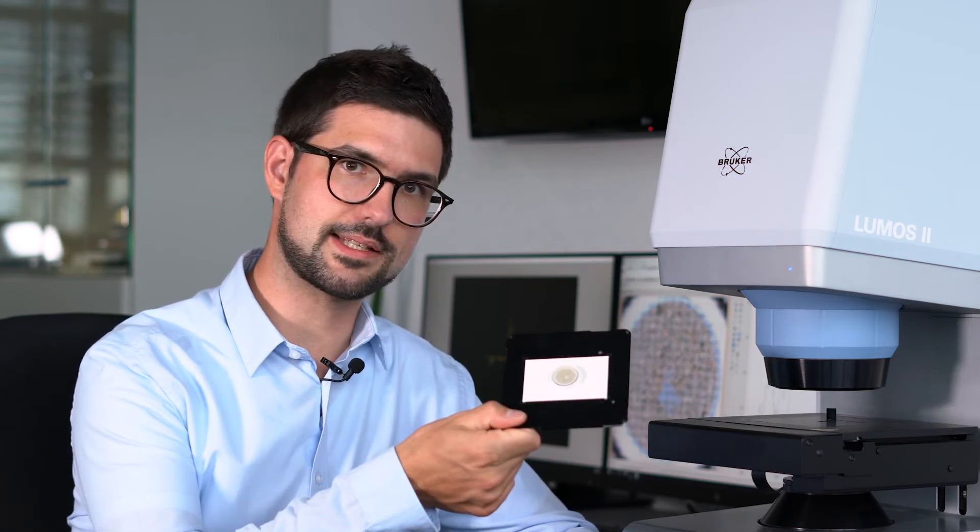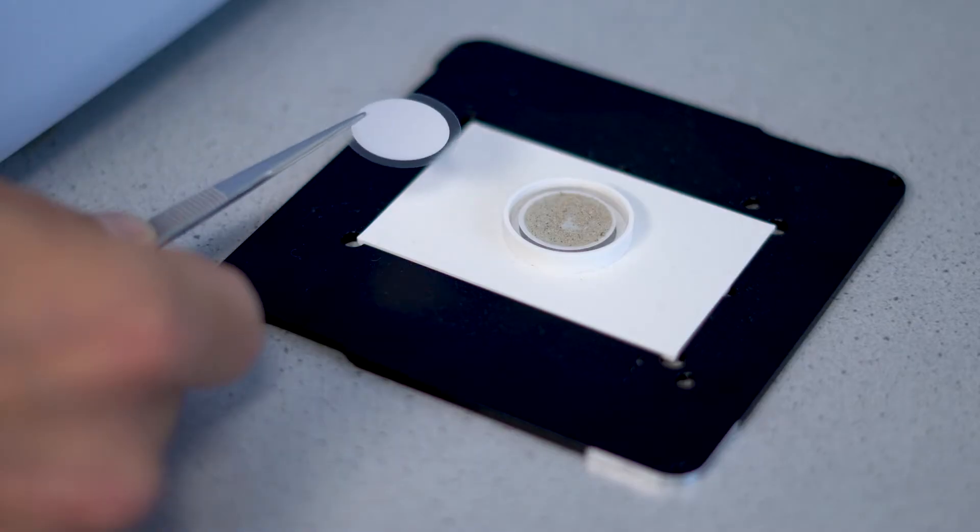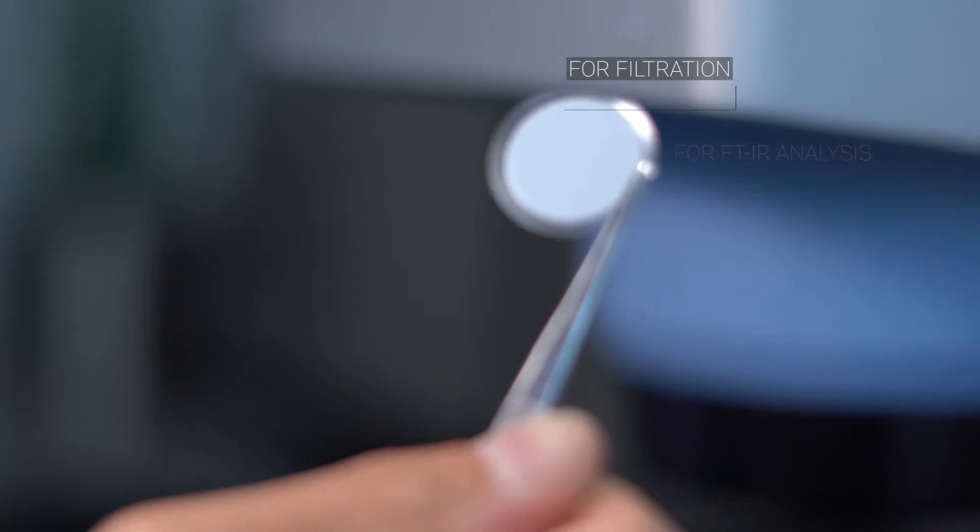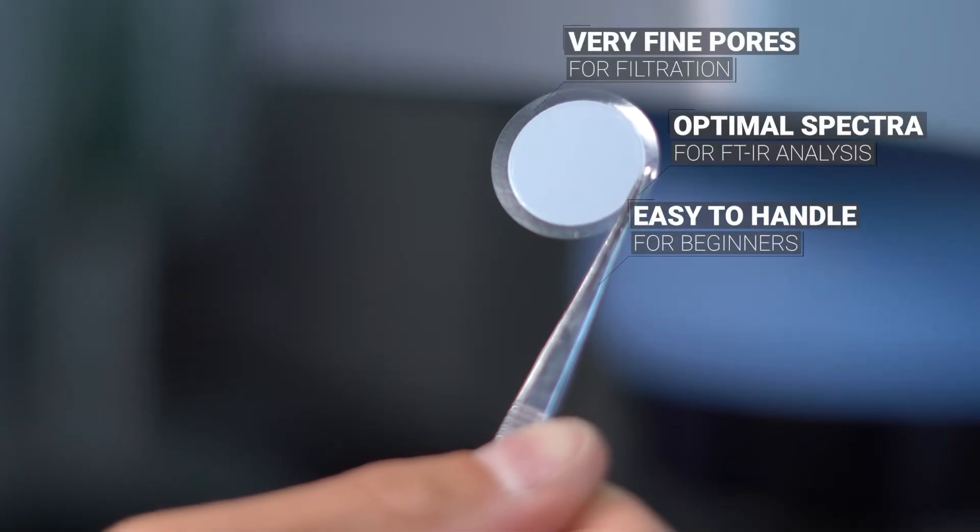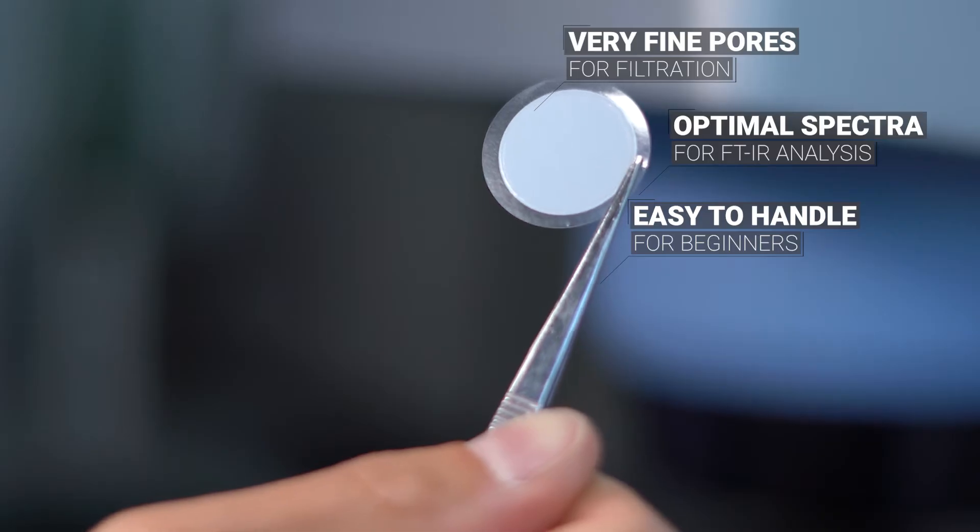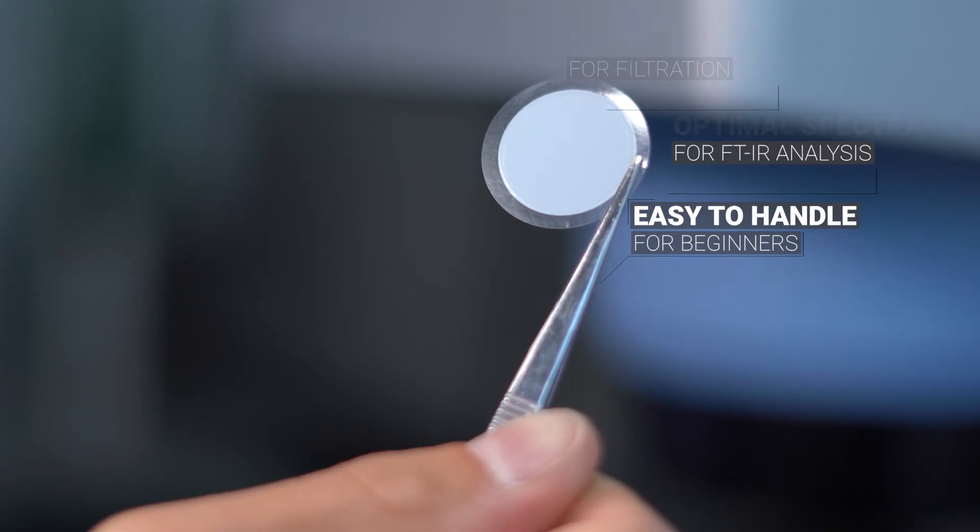But enough talk. Let me show you how the Lumos II microplastic analyzer deals with this microplastic sample on an aluminum oxide filter. These aluminum oxide filters recently have become the standard in microplastic sample preparation. They have very fine pores, deliver superior spectral characteristics, and overall provide users with much healthier microplastic data.